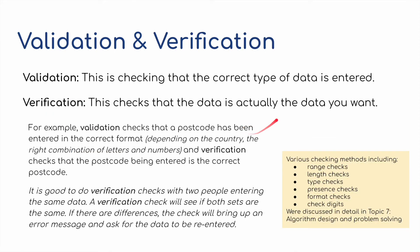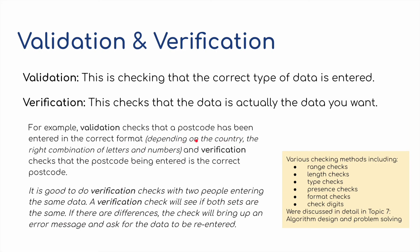The final part of this video covers validation and verification. If you've watched my other videos, you'll know this was also covered in topic seven — algorithm design and problem solving — and it's exactly the same. Validation checks that the correct type of data has been entered, and verification checks that the data entered is actually the data you want. For example, validation checks that a postcode has been entered in the correct format — the right combination of letters and numbers. Verification checks that the postcode being entered is the correct one — you don't want a postcode from South Wales when you need one from Scotland. Verification checks with two people entering the same data; if there are differences, an error message asks for the data to be re-entered.